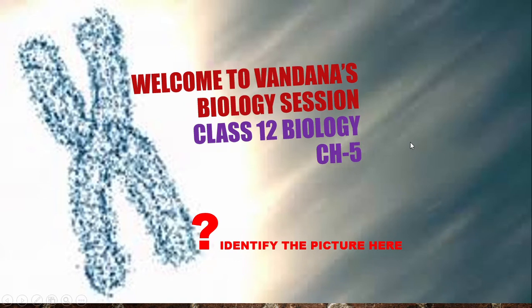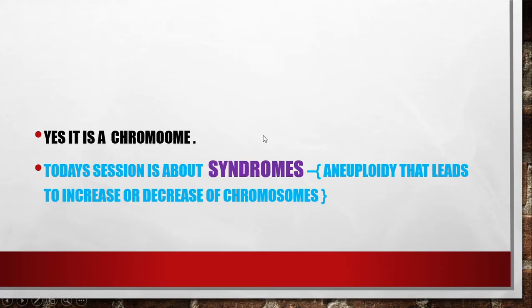Welcome to today's session. Before moving to the current session of Chapter 5, Principles of Inheritance, identify this picture — it's a chromosome. Today's session is about syndromes where we will be dealing with conditions where a chromosome is added or decreased, and what happens when there is an increase or decrease in the total number of chromosomes, for example from 46.